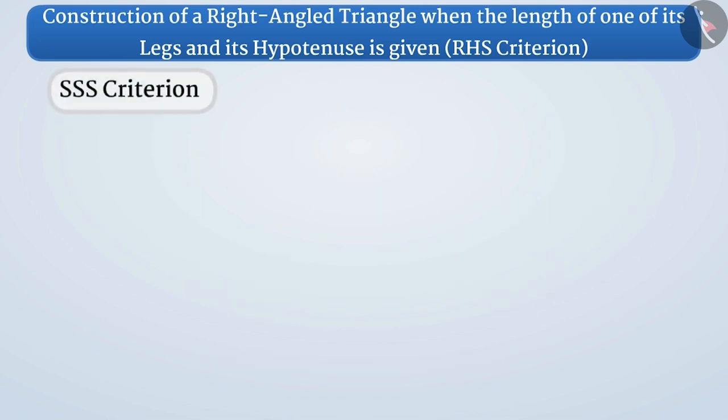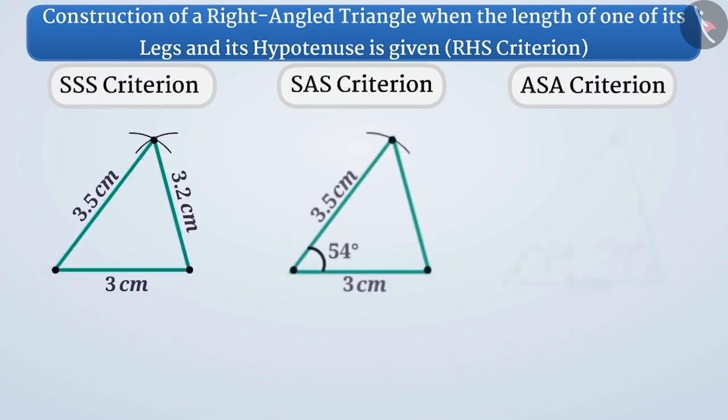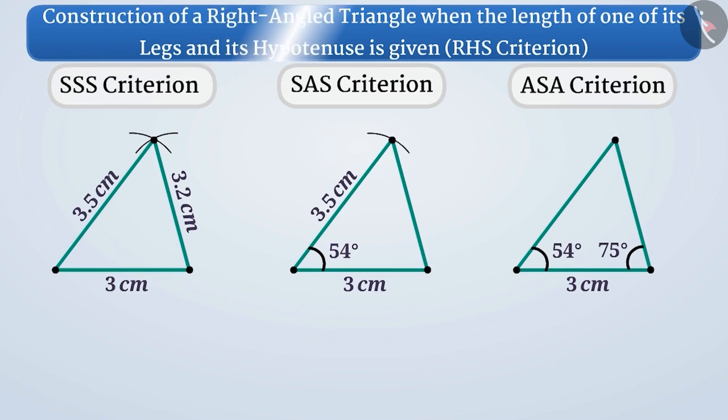So far, we have learned the construction of triangles based on SSS criterion, SAS criterion and ASA criterion. Now, we will construct a triangle based on the RHS criterion.